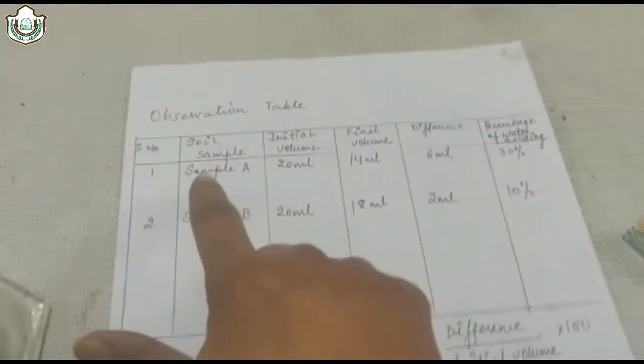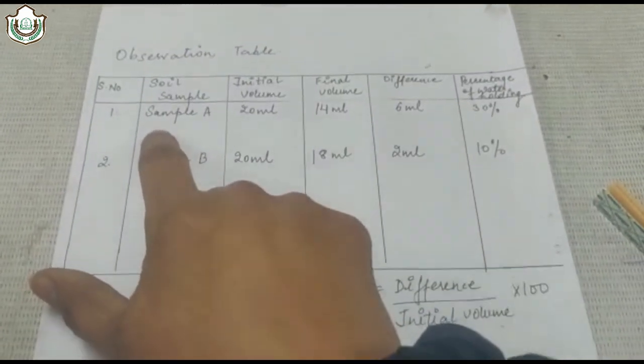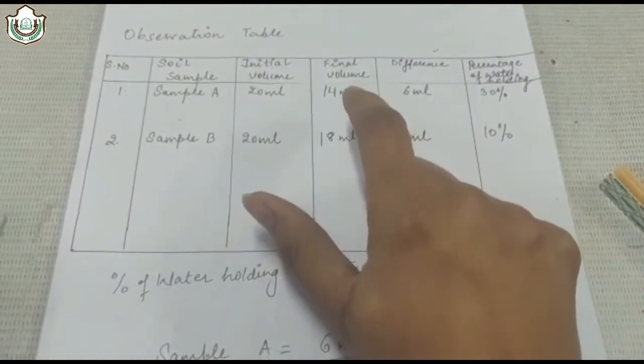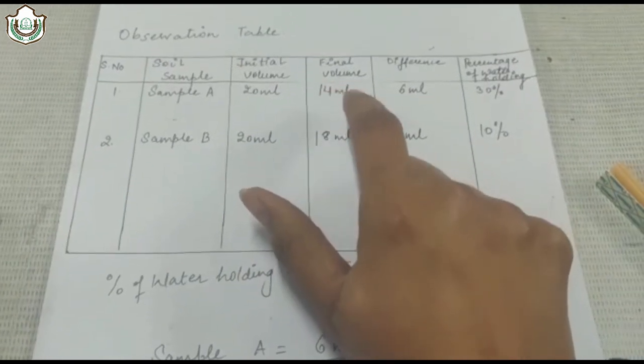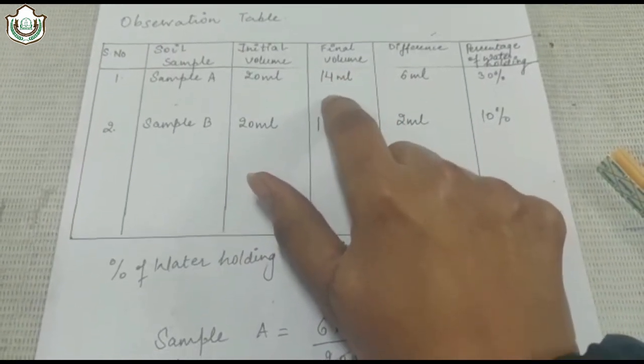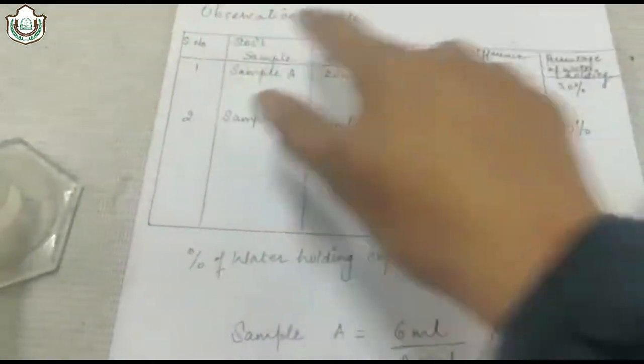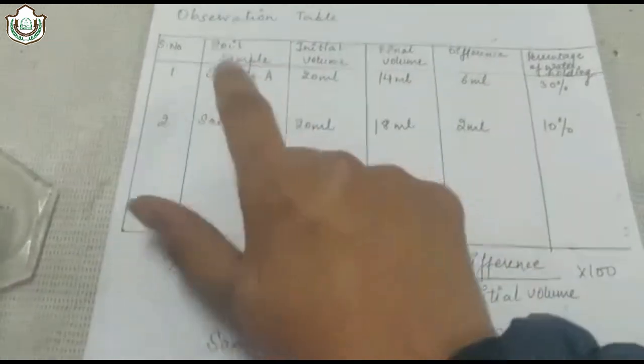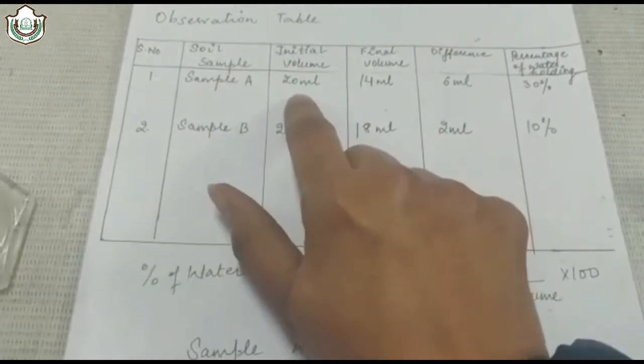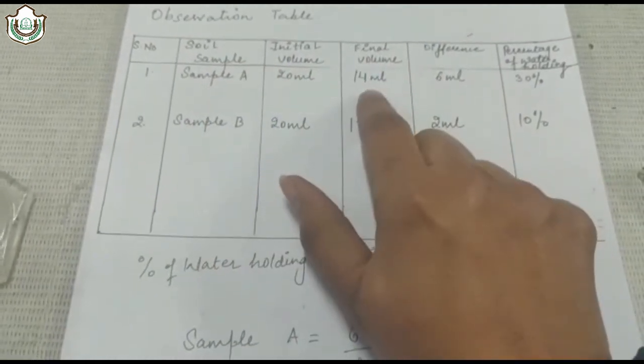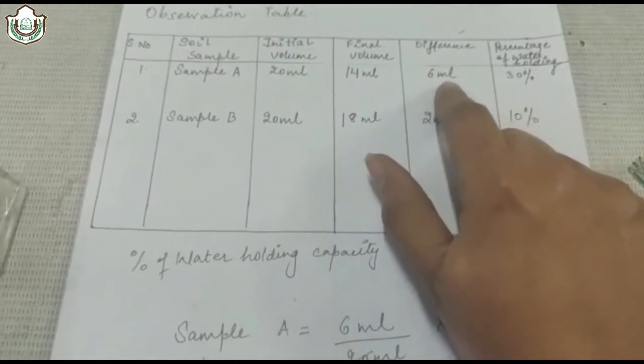After that, you will find that the final volume of sample A is 14 ml and sample B is 18 ml. Now you draw the observation table. Sample A initial volume is 20 ml, final volume is 14 ml, and the difference is 6 ml.